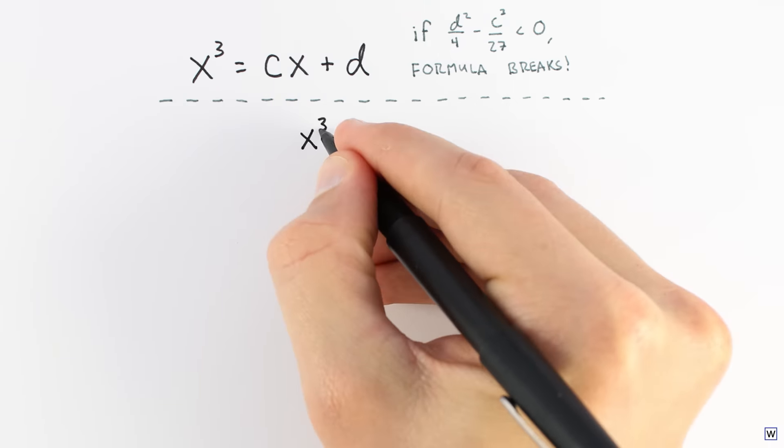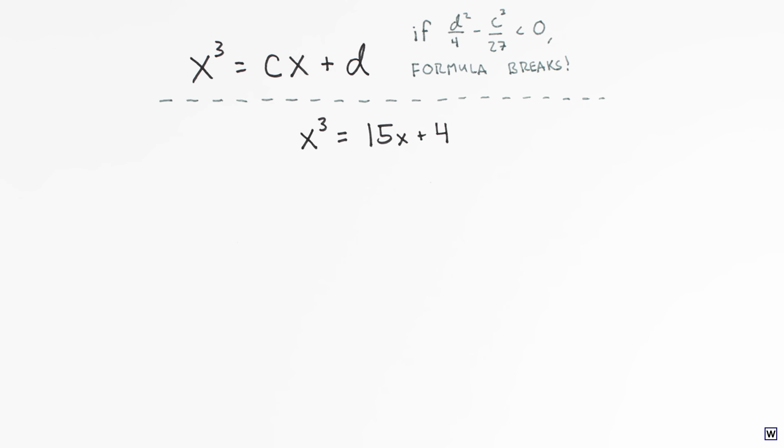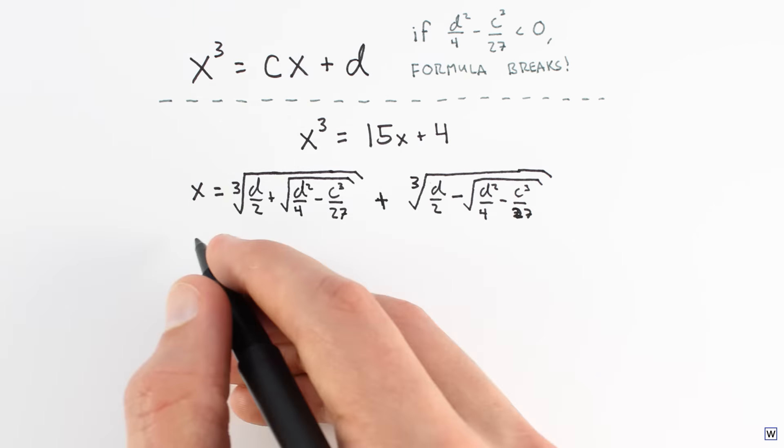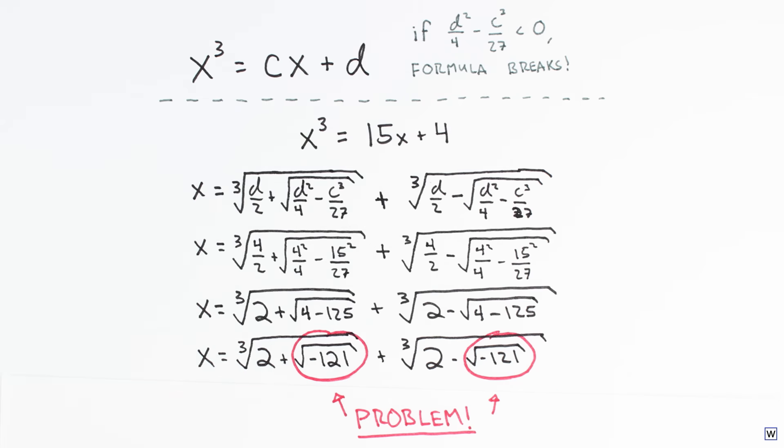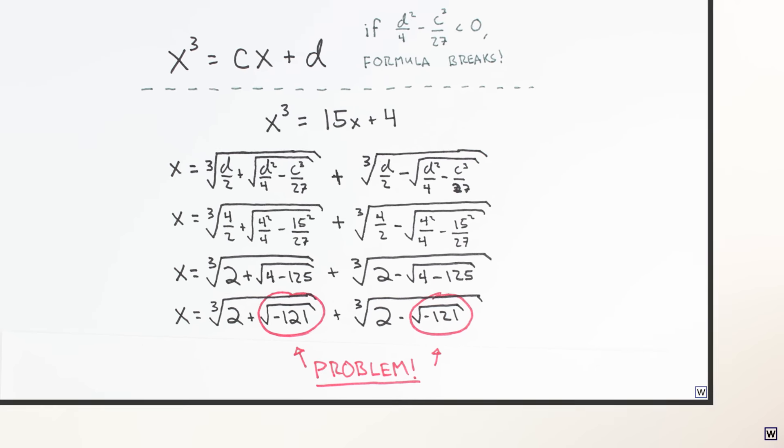Let's take the innocent looking equation x cubed equals 15x plus 4. When we plug into Cardan's formula, we get a result that involves the square root of negative numbers. The square root of a negative number created enough of a problem to stop Cardan in his tracks.